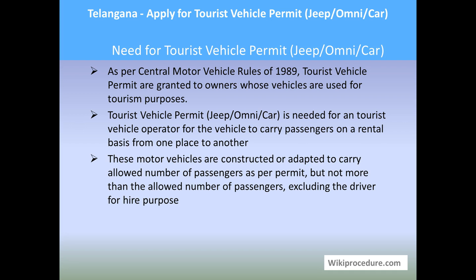Let us see the need for a tourist vehicle permit — jeep, omni, or car. A tourist vehicle is something which we hire on a local trip with our family. Depending on the number of passengers, we hire a car, omnivan, or jeep depending on the area and the number of people traveling. The tourist operator renting the vehicle must have this permit to allow his vehicle to transport people from one point to another. As per the Central Motor Vehicle Rules 1989, tourist vehicle permits are granted to owners whose vehicles are used for tourism purposes. A tourist vehicle permit is needed for a tourist operator.